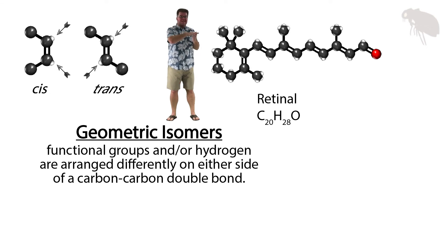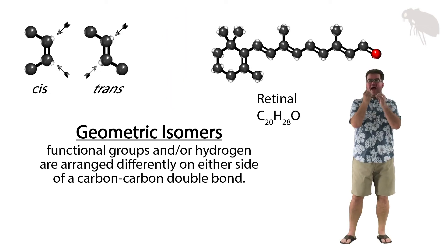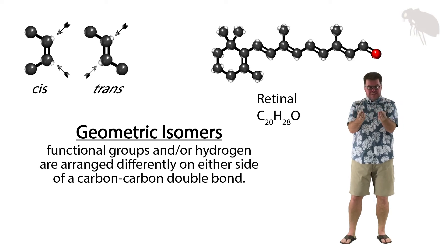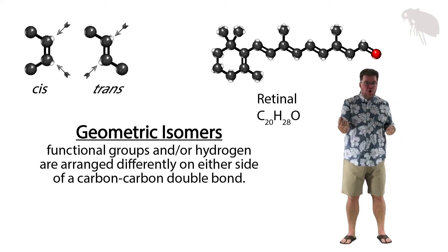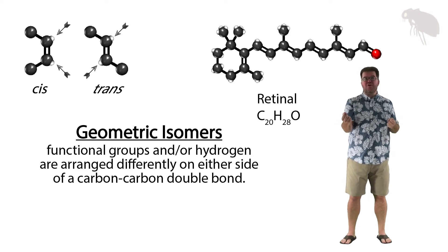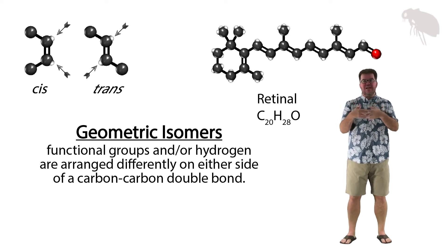So having a cis versus a trans isomer in the middle of a sequence of carbon to carbon bonds creates bends or kinks in linear structures like tails that change the shape of the molecule and produce geometric isomerism. So that's one type of stereoisomer.